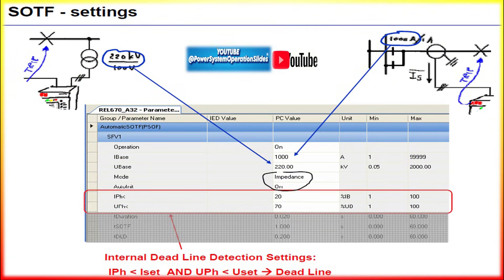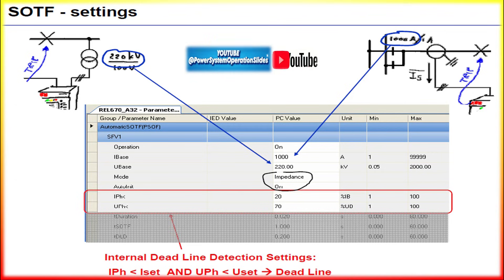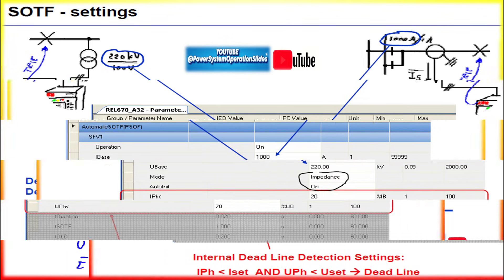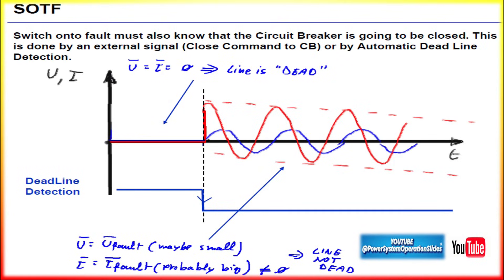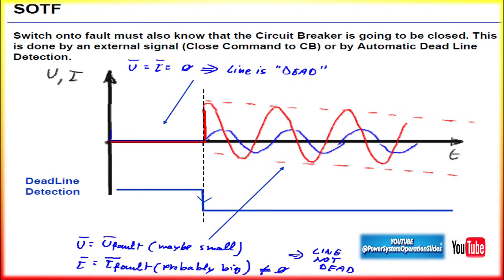The effectiveness of SOTF protection relies on carefully calibrated settings in the IED. Key parameters include voltage supervision (under-voltage detection): the relay continuously monitors the line's voltage before the breaker closes. If the line voltage is significantly lower than the set threshold — typically close to zero — this indicates that the line is de-energized or faulted. For current supervision (overcurrent detection) after the breaker closes, the relay instantly measures the fault current. The threshold should be set high enough to distinguish between normal inrush currents due to charging the line and fault current.